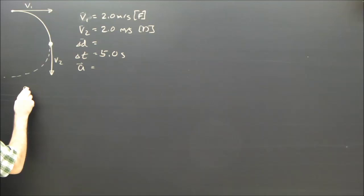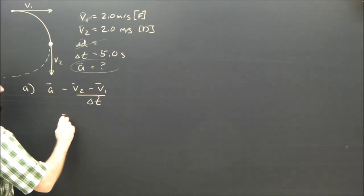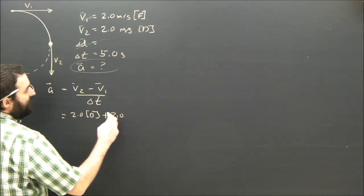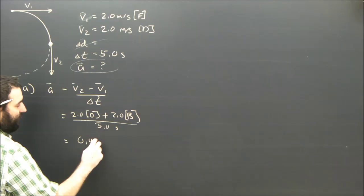For part A, we're trying to find the acceleration. We don't know the displacement, so we're going to use the definition of acceleration. No problem. When we sub in, we'll get 2.0 meters per second down minus 2 forward. But I'm going to change that to plus 2.0, instead of forward it'll have to be backward. And we'll divide that by 5 seconds.